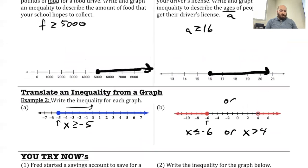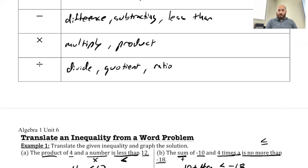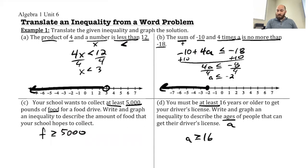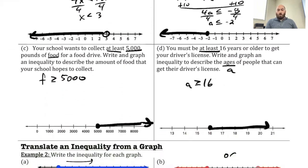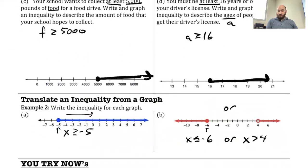So we're going to be doing two things. We're going to be translating phrases into our inequalities, solving them and graphing. We're also going to be able to take our inequalities as they're shown on the graph and turn those into our inequality statements. So that's it for 6B. It's a quick one today. All right, take care, everybody.